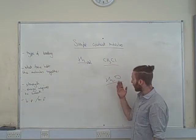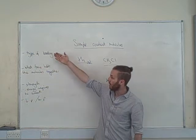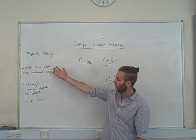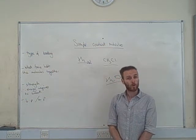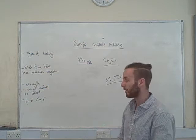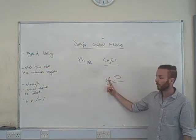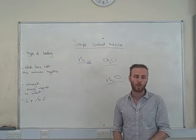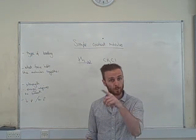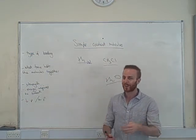Just going through that one more time, with water, we would say the type of bonding is simple covalent. What holds the molecules together? We've got hydrogen bonds, and again, you might want a sentence to be a bit more specific. So, the delta-positive hydrogen of one molecule is attracted to the lone pair of electrons on the oxygen of a neighbouring molecule. Watch that video again if you're not sure.